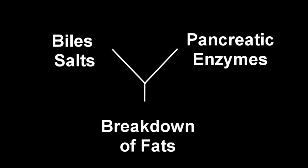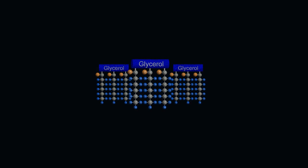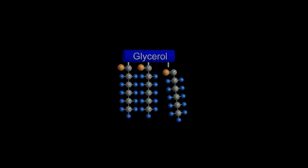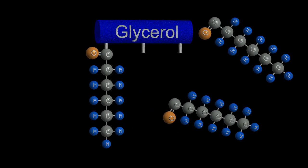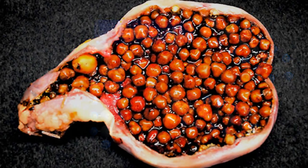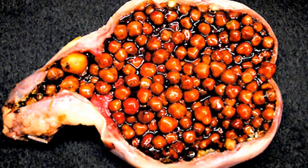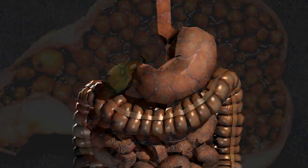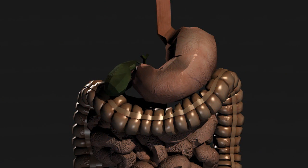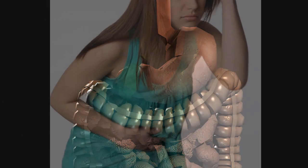and the secretions from the pancreas begin the process of breaking down these triglycerides into a usable form that can be brought back into our bodies. This is why patients who have gallstones, when they eat a fatty meal, feel pain — fat causes the gallbladder to contract against those stones.